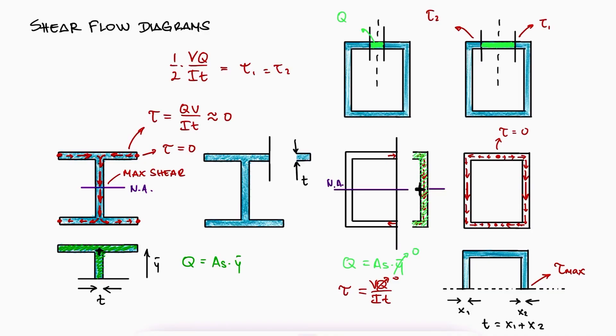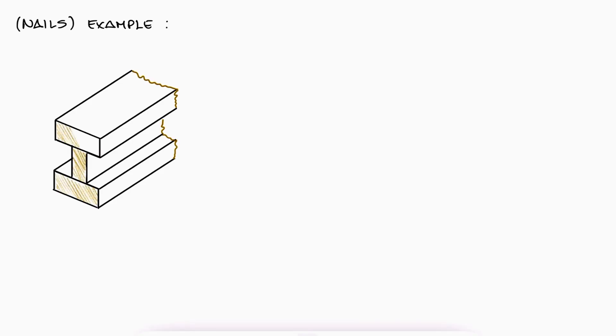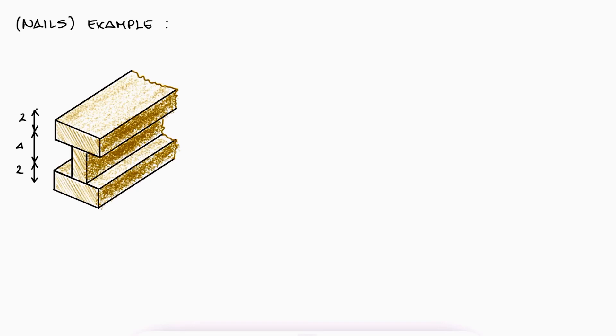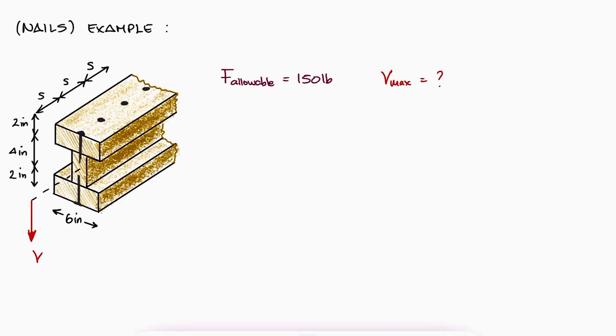Let's take a look at a quick example of shear flow for calculating shear forces in nails. If you want to check out other examples including shear forces and stresses in I-beams and box beams, make sure to check out the links to those examples in the description below. Three boards each two inches thick are nailed together to form a beam that is subjected to a vertical shear. If the allowable shearing force in each nail is 150 pounds, what is the allowable shear V if the spacing S between the nails is 3 inches? Remember to try this problem on your own before watching the solution up next.